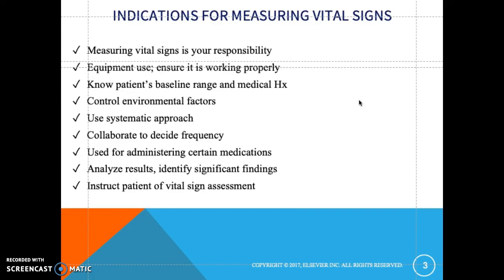Ensure equipment is working appropriately. When checking blood pressure, make sure you use the appropriate cuff — an adult cuff for adults and a pediatric cuff for pediatric patients. If the patient's arm is quite large, do not use a regular cuff as it will alter the readings. Also, ask your patients before checking their vital signs — for example, whether they were exercising within the last 30 to 40 minutes before measuring blood pressure.